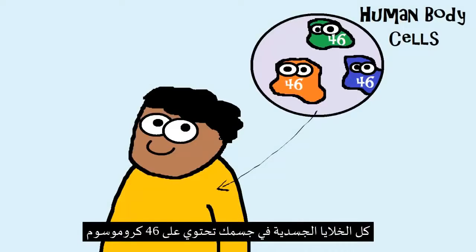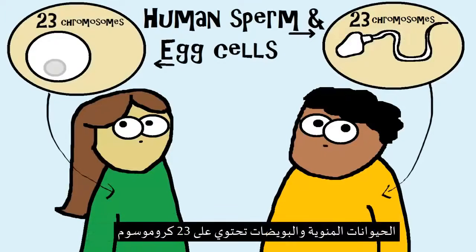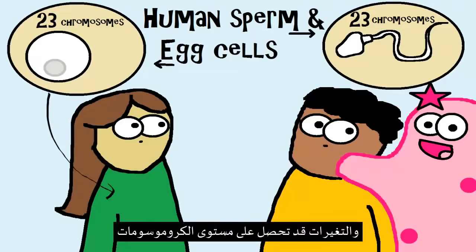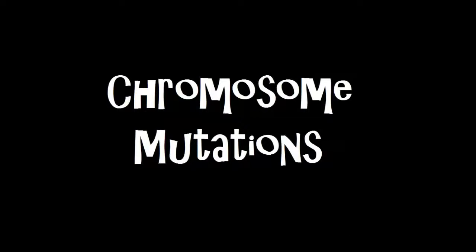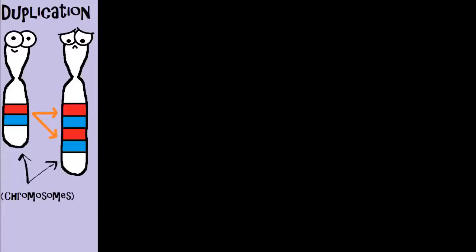All of the body cells in your body have 46 chromosomes, while human sperm and egg cells have 23 chromosomes. Changes can occur at that large chromosome scale too. Just like insertion in a gene mutation where bases got added, you can also have something called duplication in chromosomes — mutations where extra copies of genes or chromosomes are generated.